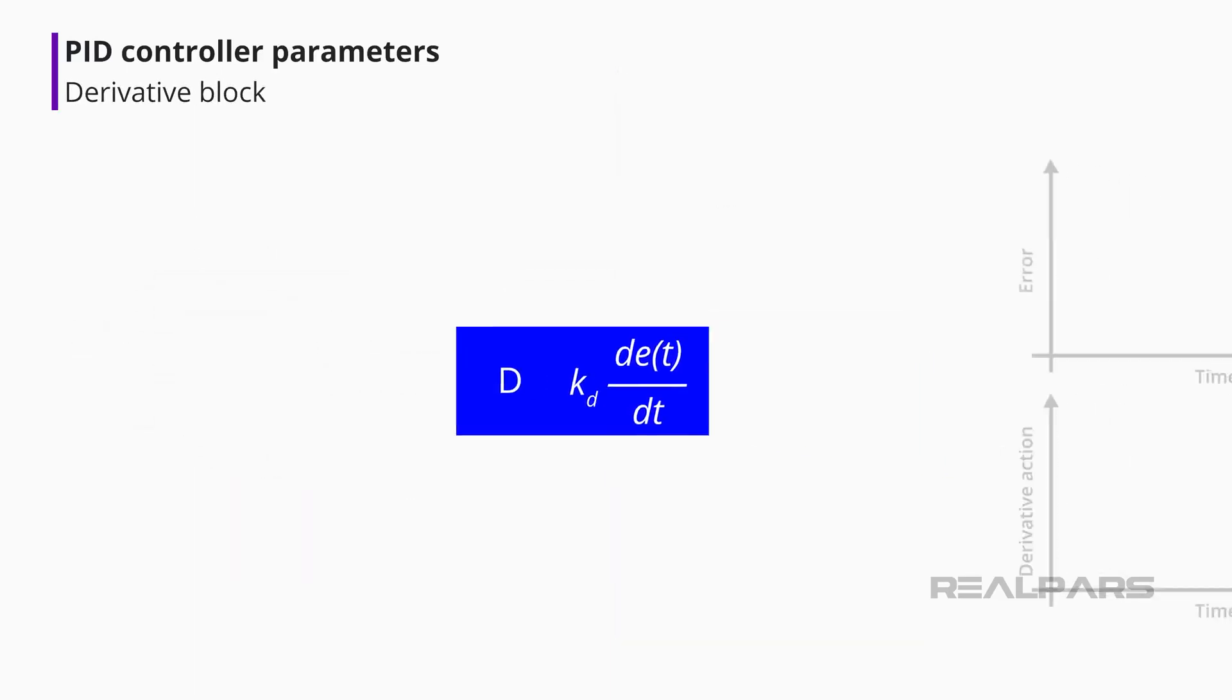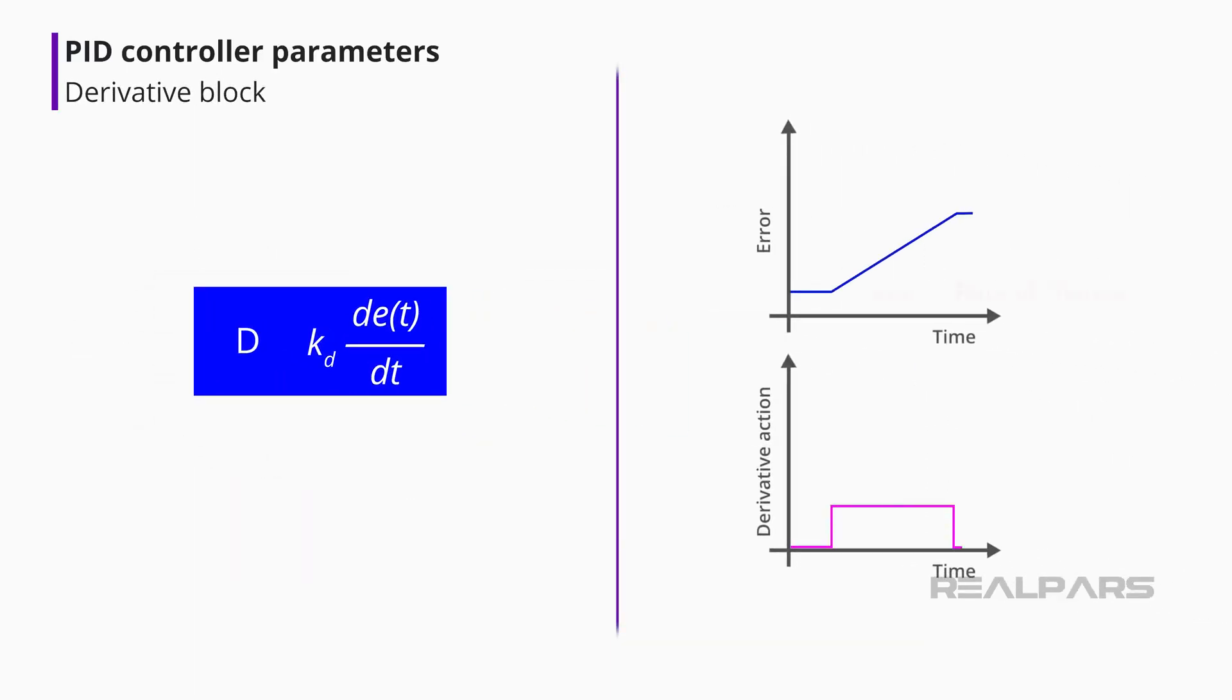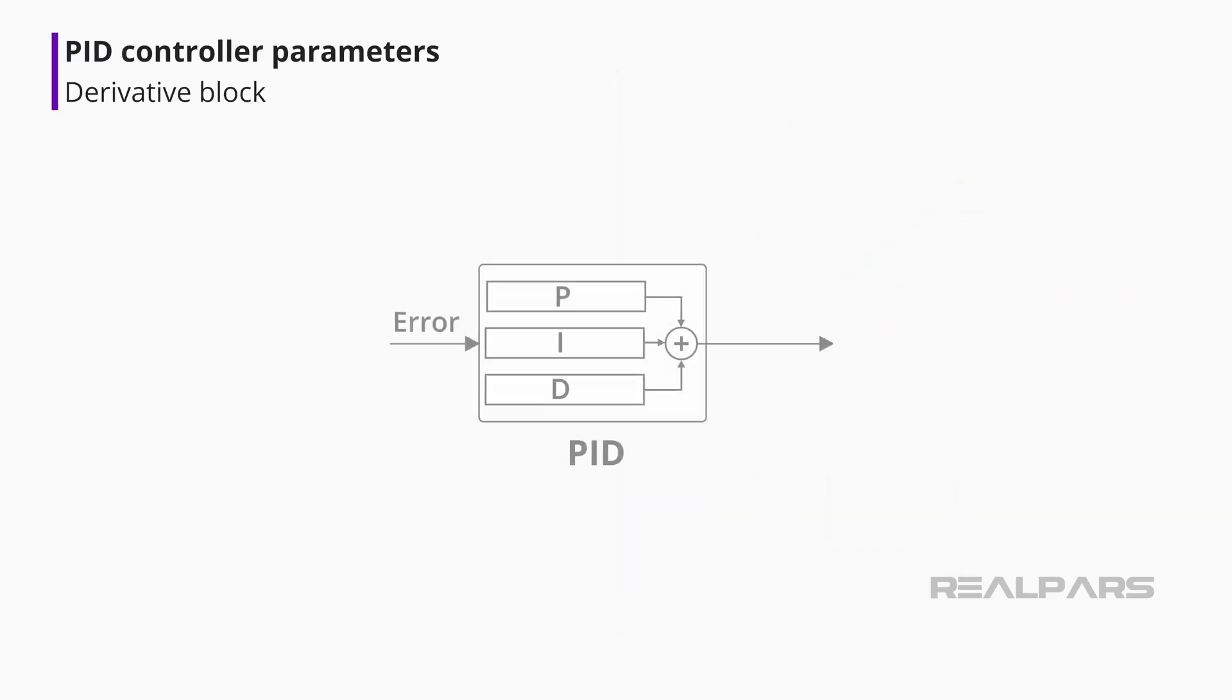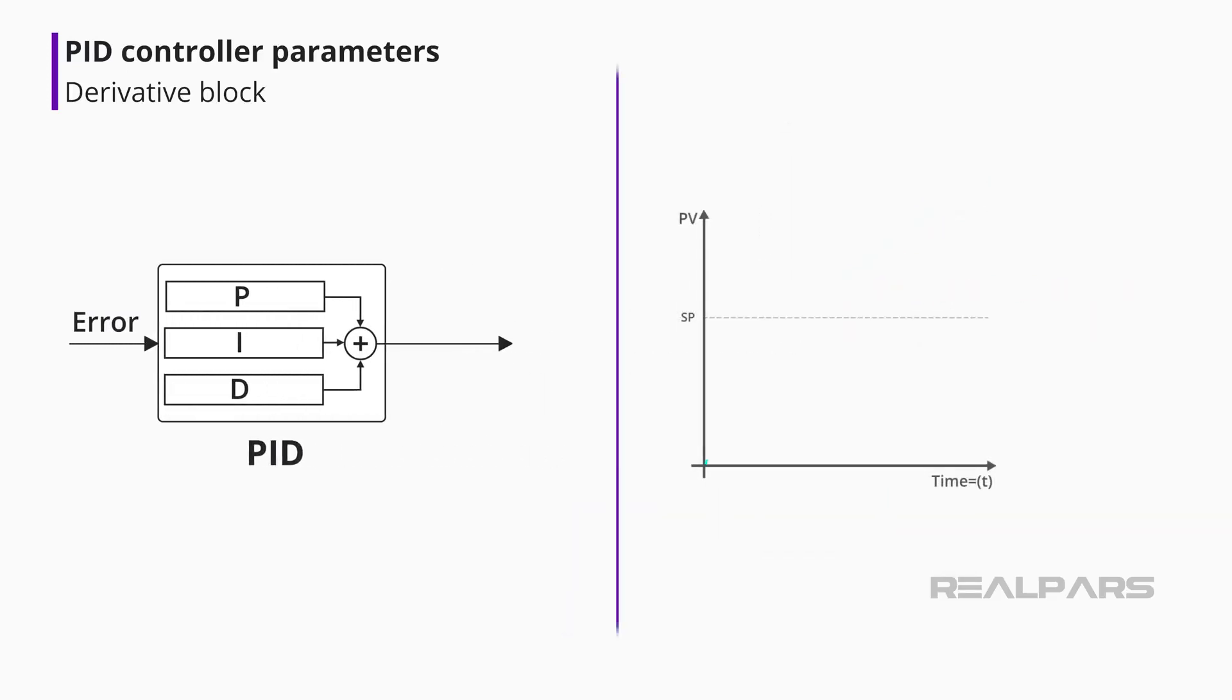The Derivative block creates an output signal proportional to the rate of change of the error signal. The faster the error changes, the larger the Derivative output. Derivative control looks ahead to see what the error will be in the future and contributes to the controller output accordingly.